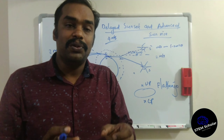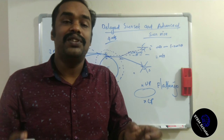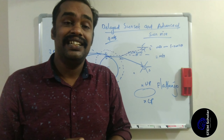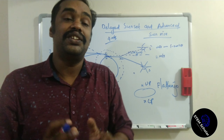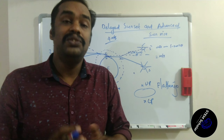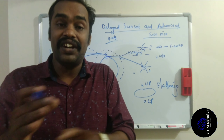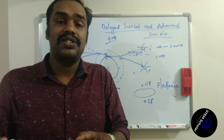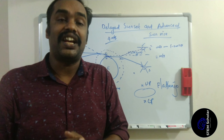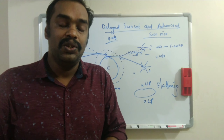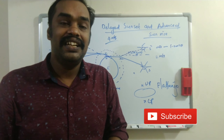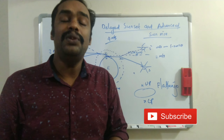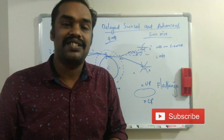Hope you understood it. We have discussed about the delayed sunset and early sunrise due to differences in densities and atmospheric refraction. Hope you understood it. In the next class, we will come with a new topic. Do write your comments. Thank you.